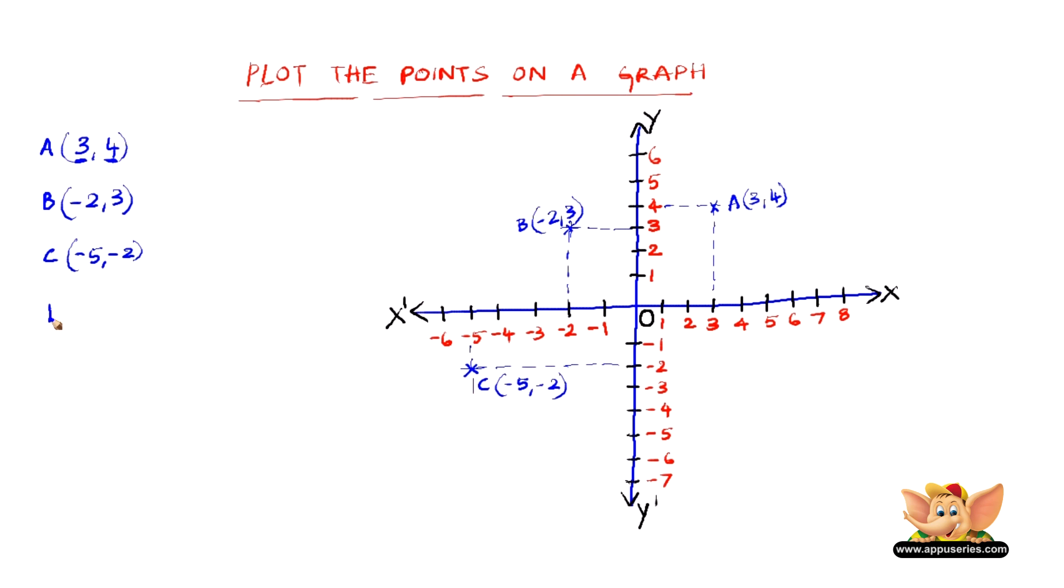Let us look at one more point which is 4 comma minus 3. So 4 is positive x axis. Let us try to meet that line with the minus 3 of y axis and it is here. So this meets perfectly over here. So this point is D of 4 comma minus 3.